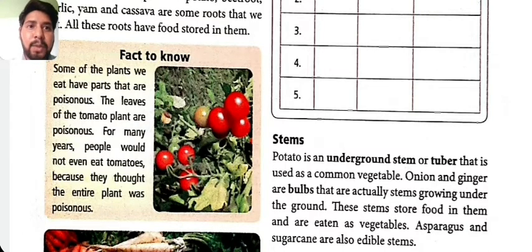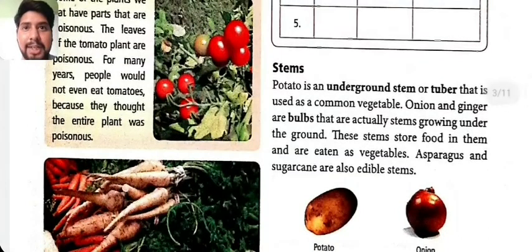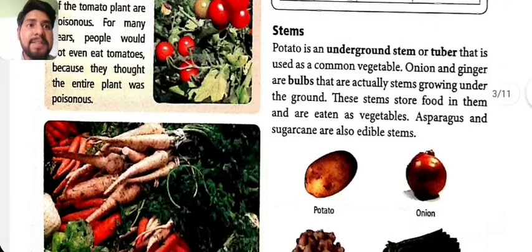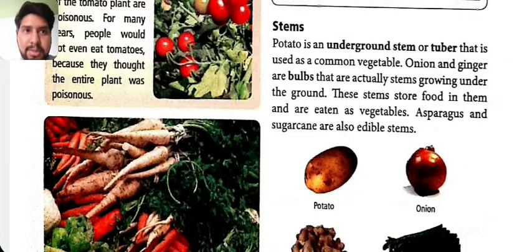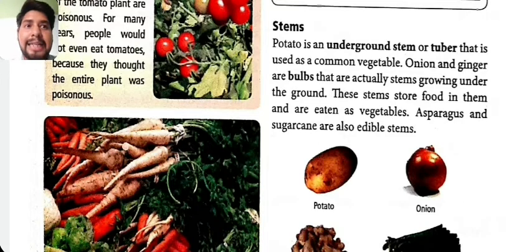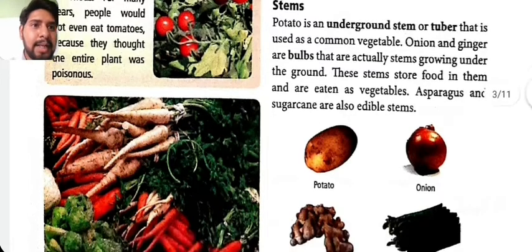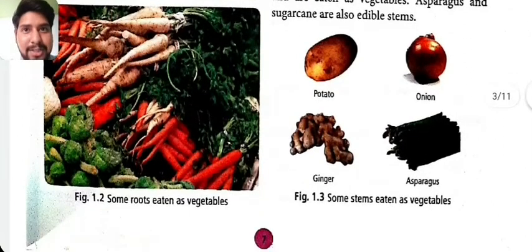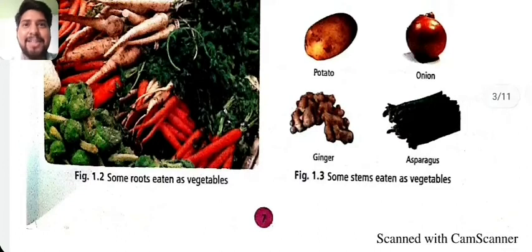Now, let's look at stems. Potato is an underground stem. Potatoes are underground stems or tubers used as common vegetables. Onion and ginger are bulbs, which are actually stems growing underground. These stems store food in them and are eaten as vegetables. Sugarcane is also an edible stem.